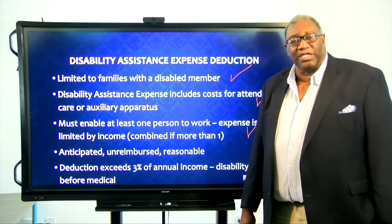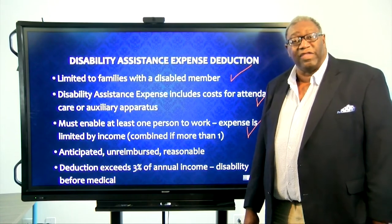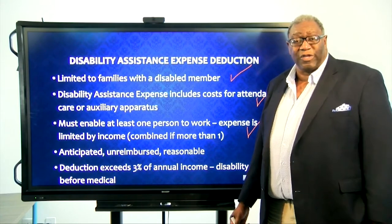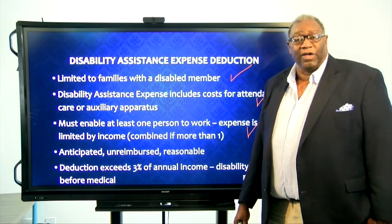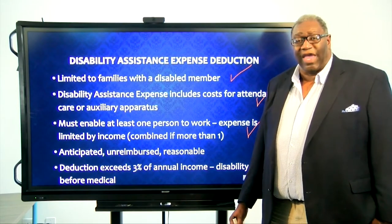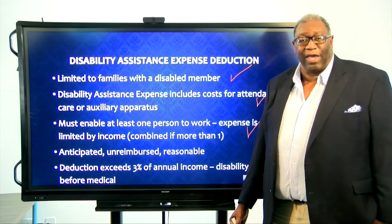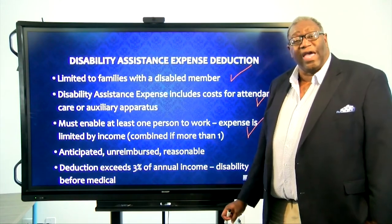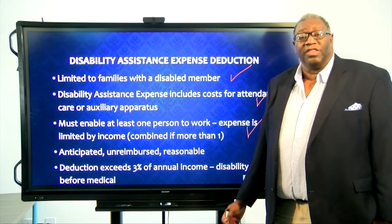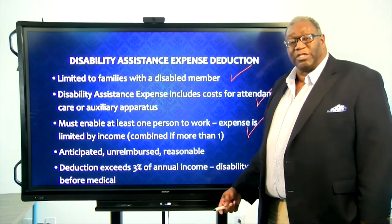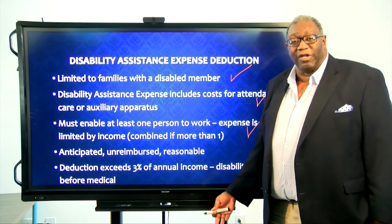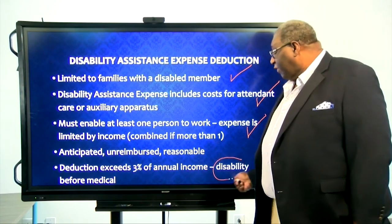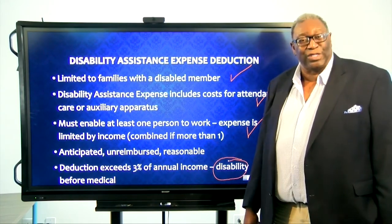And lastly, the deduction — the 3% of the annual income threshold — has to be met in order for the expenses to apply. In some cases, you may have a family that qualifies for both medical and disability expenses, and you would have to apply the 3% to both. The easy way I remember this is to apply it in alphabetical order: disability comes before medical. So you would first apply it to disability, and then apply what's left over to medical.